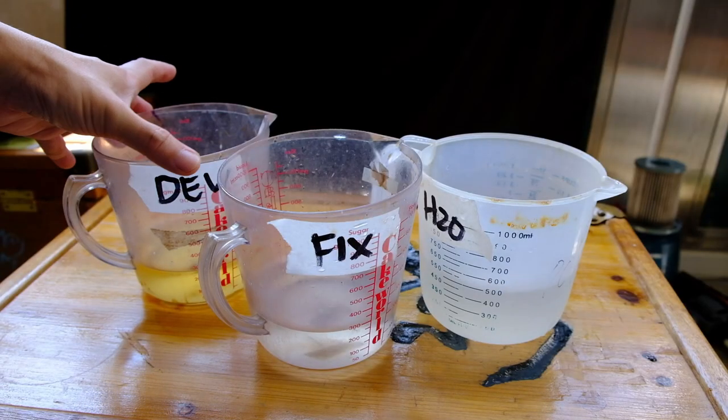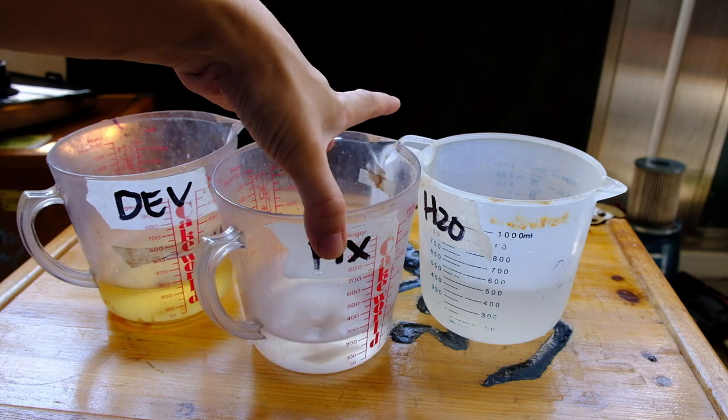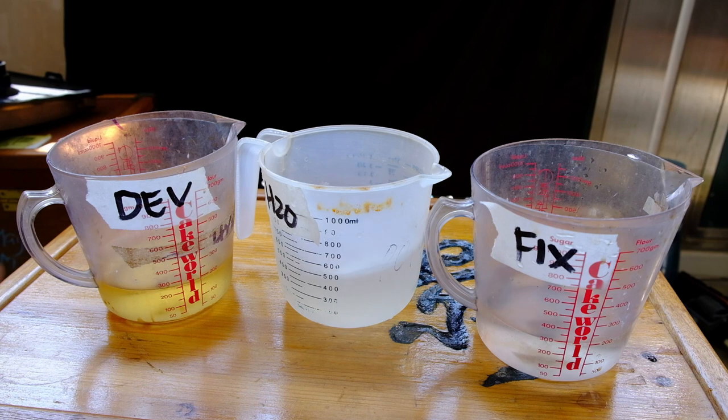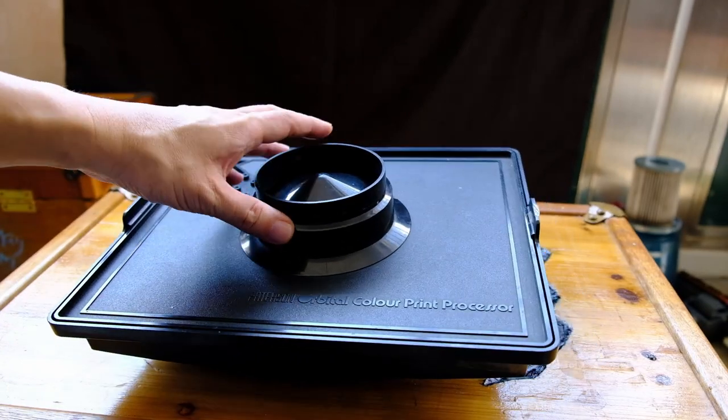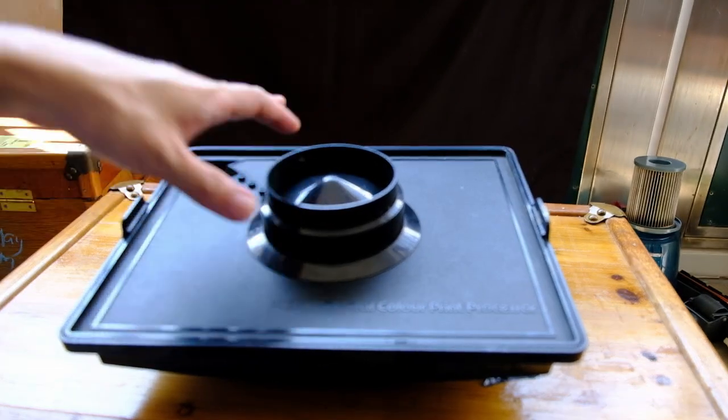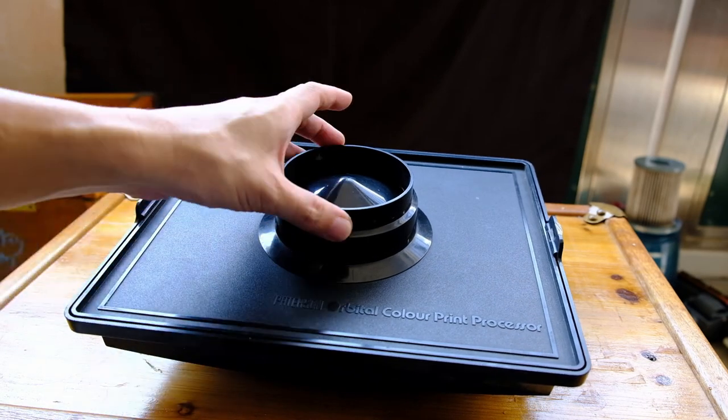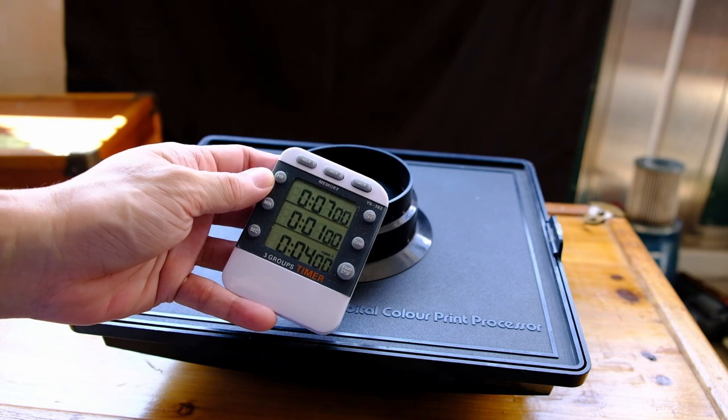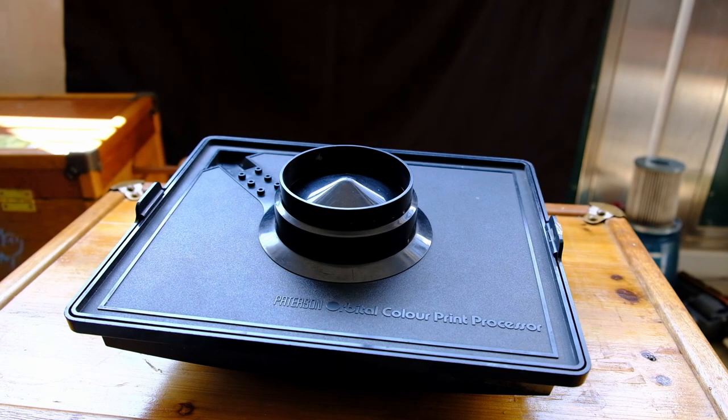I'm ready to process the film. I have my HC-110 dilution B developer, this is the fixer. This is just Ilford rapid fixer, one plus nine, and this is plain water which I will use as a stop bath. The two pieces of film have been loaded inside this Paterson Orbital Color Print Processor. If you want to find more about this processor, check out the link on the top right hand corner where I talked about this processor in one of my last videos. For the developing, I will develop it at 20 degrees C for seven minutes.